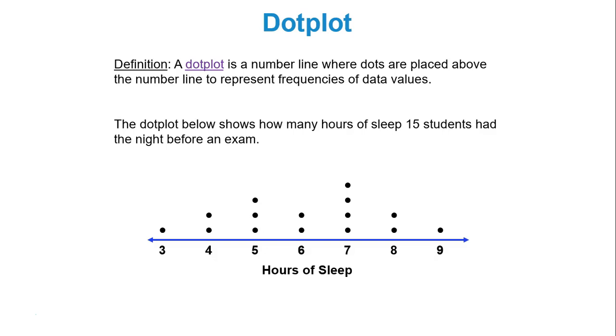First let's start with the dot plot. It's literally a number line where dots are placed above the number line to represent frequencies of data values. Below the number line you have your data values. Each time it occurs you put a dot above that data value. We have 15 dots to represent the 15 students.